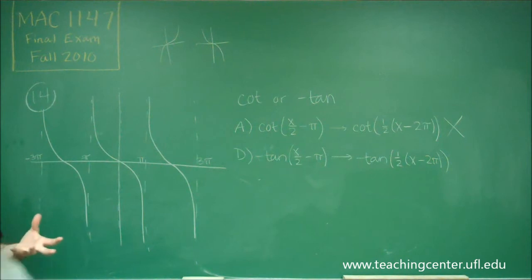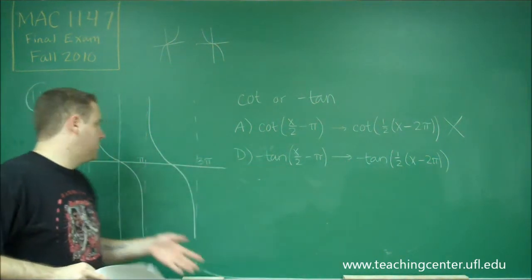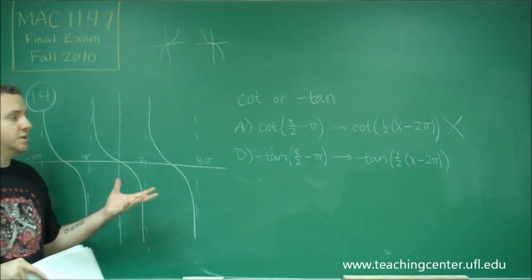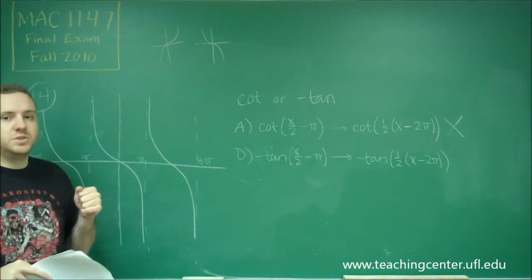Let's think about what happens here. This is a tangent graph that's been flipped upside down. So far, so good. It has a period of 2π because it's 1/2. That's exactly what we should have.